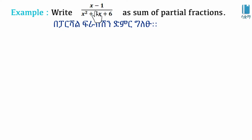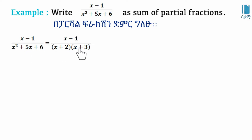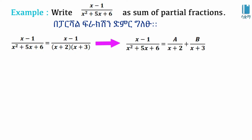Consider (x - 1) over (x² + 5x + 6) as a sum of partial fractions. We decompose the denominator x² + 5x + 6 by factorizing it as (x + 2)(x + 3).